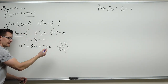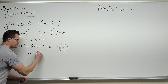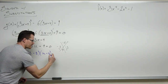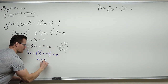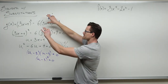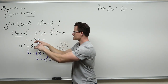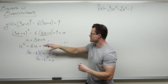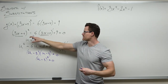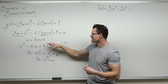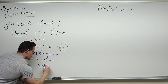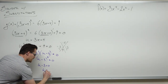So u squared minus 6u plus 9 does factor, but it factors as (u−3)(u−3) equals zero — or u minus 3 squared. We set this equal to zero after having everything on one side, with the same exact expression — one being squared, one to the first power. We do a substitution to get a quadratic, factor it, and then solve in terms of u. If u minus 3 equals zero, then u equals positive 3.